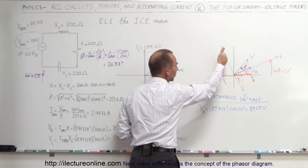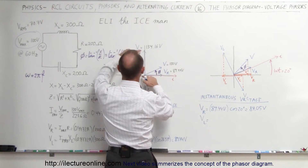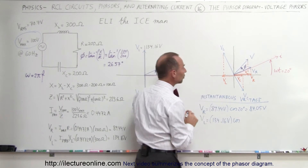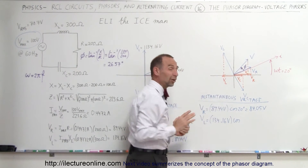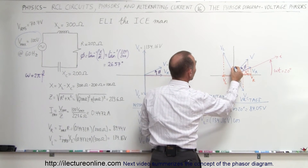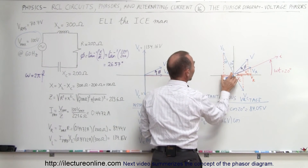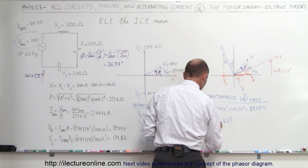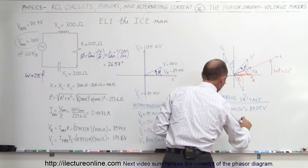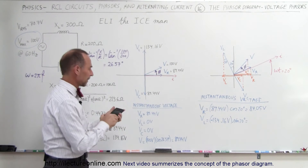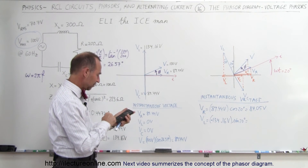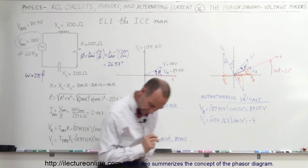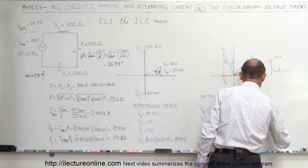Now, what will be the voltage across the inductor? That projection will be equal to the total inductive voltage, which is 134.16 volts, but notice we're going to get a negative value. The 20 degree angle here means this is the opposite side of that angle, so we have to take the sine of 20 degrees, and we put a negative in front of that because we know we're going to get a negative value. So it's negative 134.16 times the sine of 20 degrees, which gives us negative 45.89 volts.